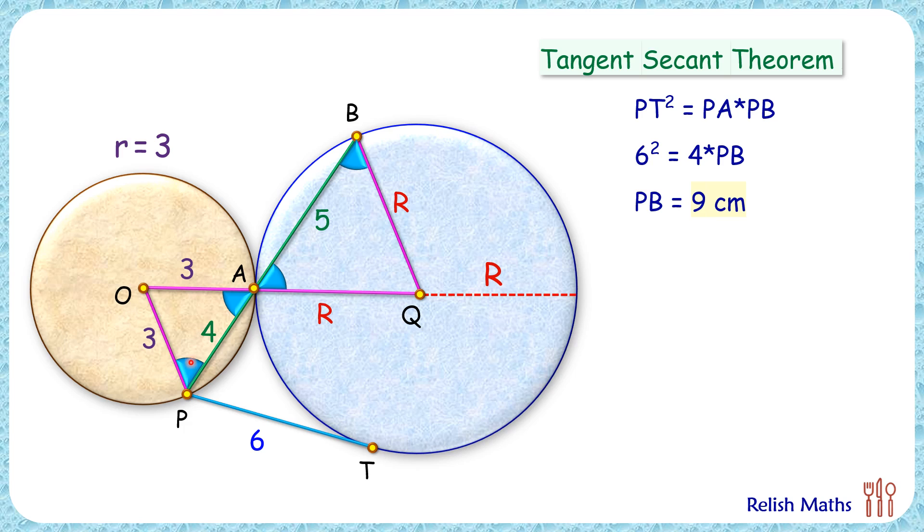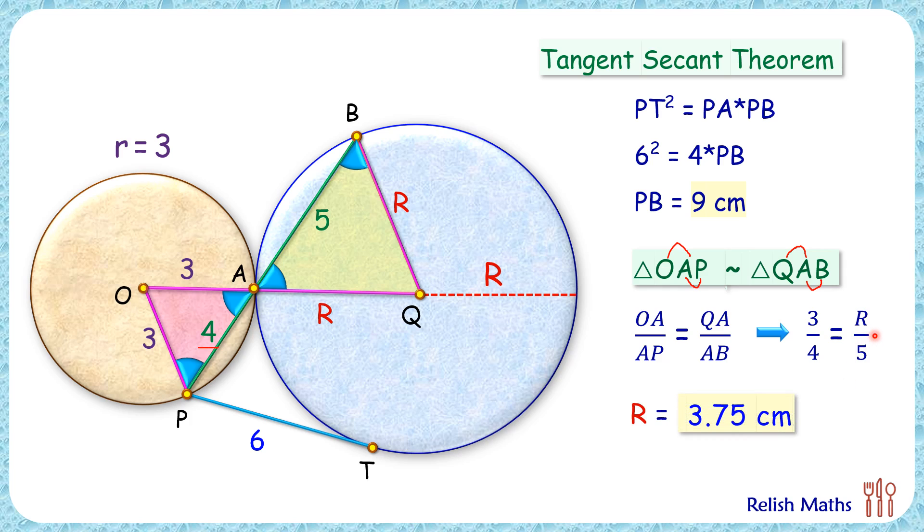Now by angle-angle similarity, we can say that these two triangles are similar to each other. That is, triangle OAP is similar to triangle QAB. As the triangles are similar, the ratio of corresponding sides will be equal. So here we can take OA upon AP is equal to QA upon AB. Putting the values here, OA is 3 centimeters and AP is 4 centimeters. Solving this, we'll get the value of R as 3.75 centimeters, and that's our answer.